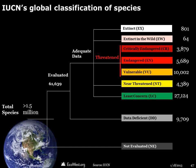On the global level, the International Union for the Conservation of Nature, or IUCN, has evaluated more than 61,000 of the Earth's species — just a fraction of the total named species, and an even smaller share of the total number of species. The status of nearly 10,000 of those species is still unknown because of a lack of data. Almost half are in the least-concerned category, but nearly 1,000 species have already gone extinct in the wild, and nearly 20,000 species are classified in one of the three threatened categories: vulnerable, endangered, and critically endangered.